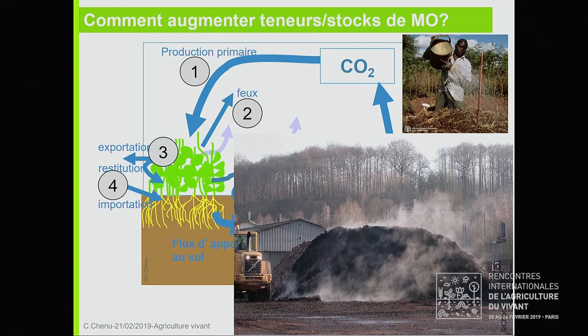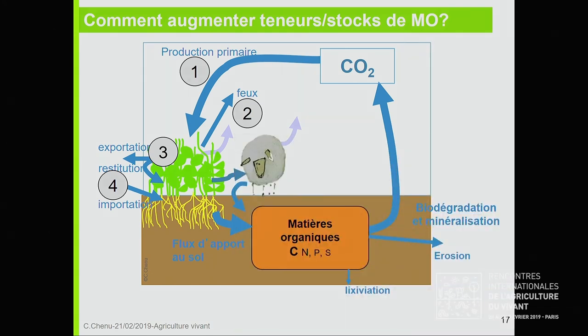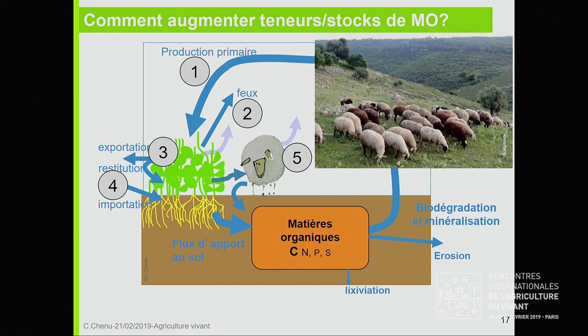Que peut-on faire d'autre ? Apporter des matières organiques exogènes, qui viennent d'ailleurs que la parcelle : les effluents d'élevage, les composts, les produits de nos activités urbaines, ça fait une source de matières organiques supplémentaires. Ce qu'on peut faire aussi, c'est plus complexe : gérer l'élevage, gérer le pâturage, quelle est la densité d'animaux sur la parcelle, la fréquence des fauches — toutes les pratiques en prairie peuvent intervenir.